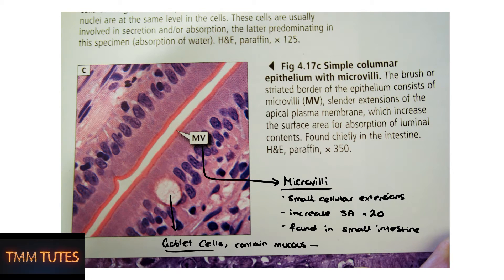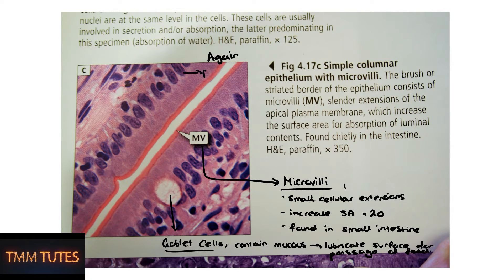We also have a goblet cell there, filled with mucus, which is secreted into the lumen to lubricate the contents for food passage. Goblet cells are also very important in respiratory epithelium. You can see the H&E stain — the nuclei are slightly more purple, but definitely not as dark as the nucleus itself.